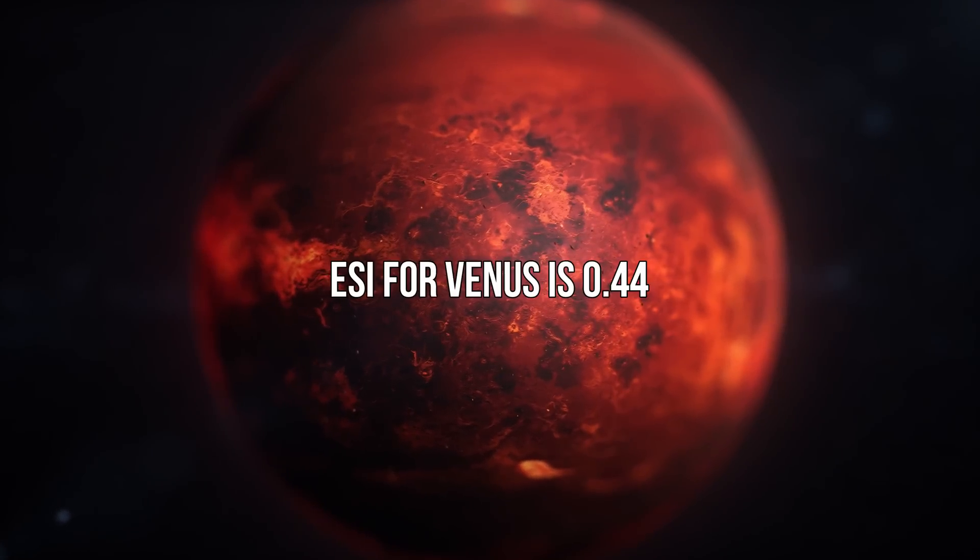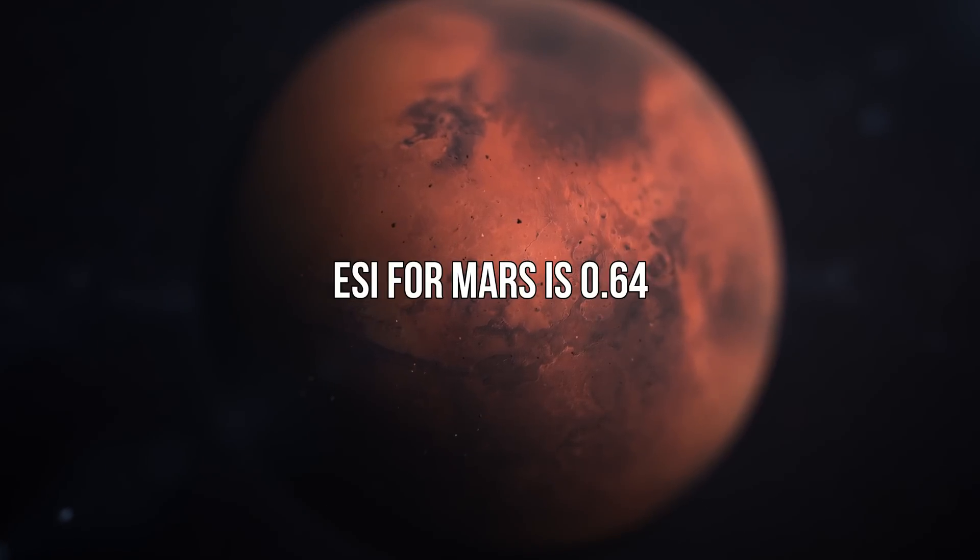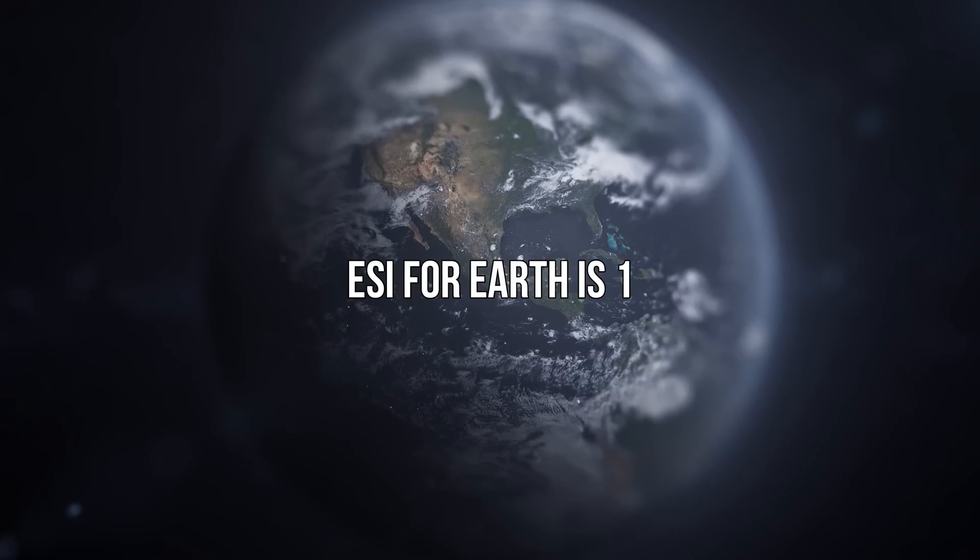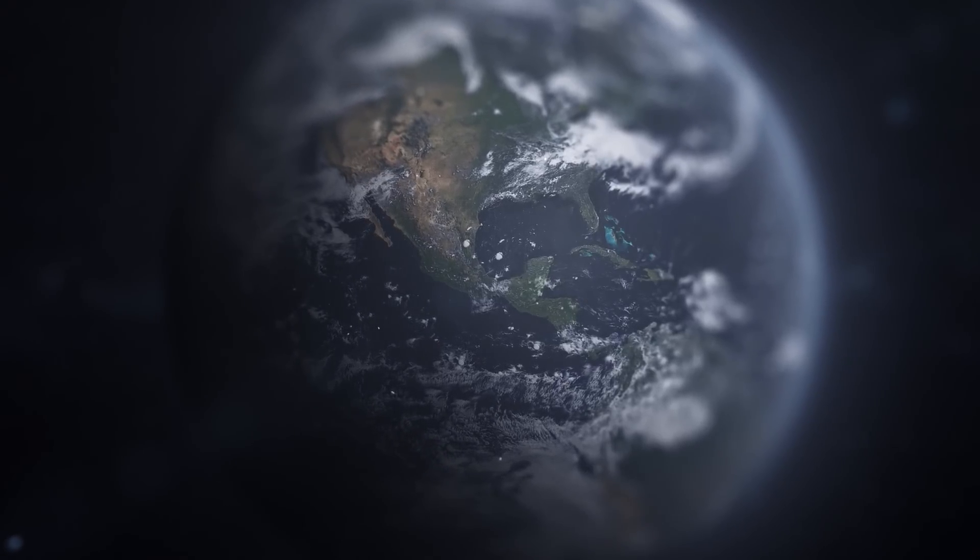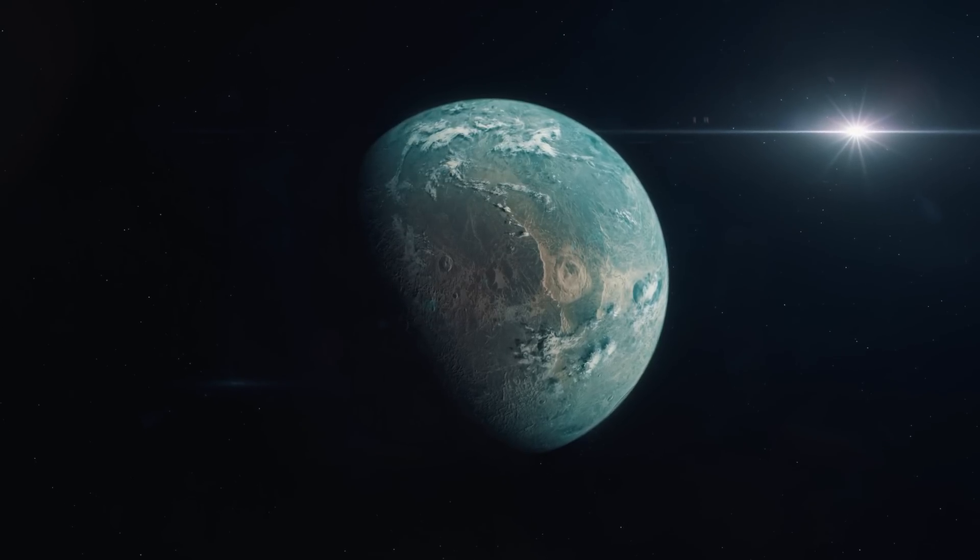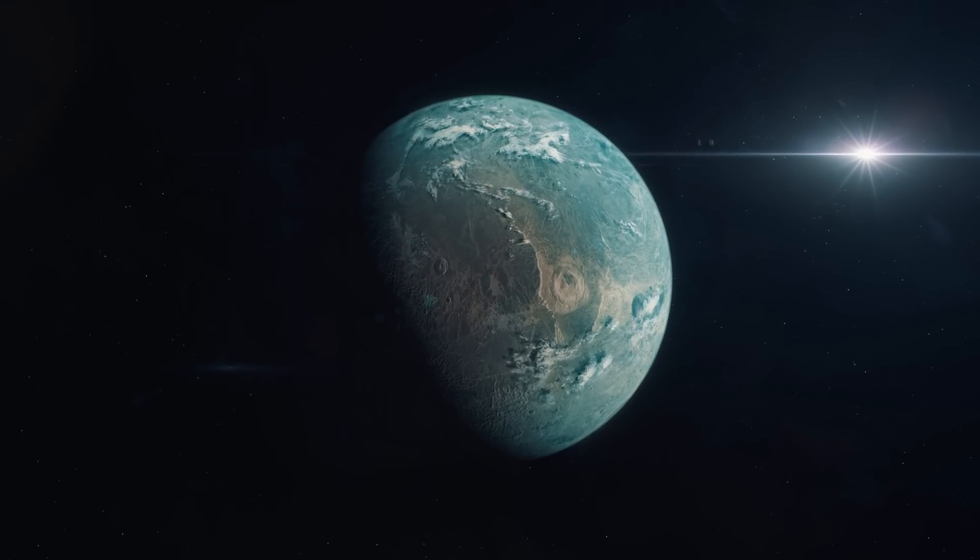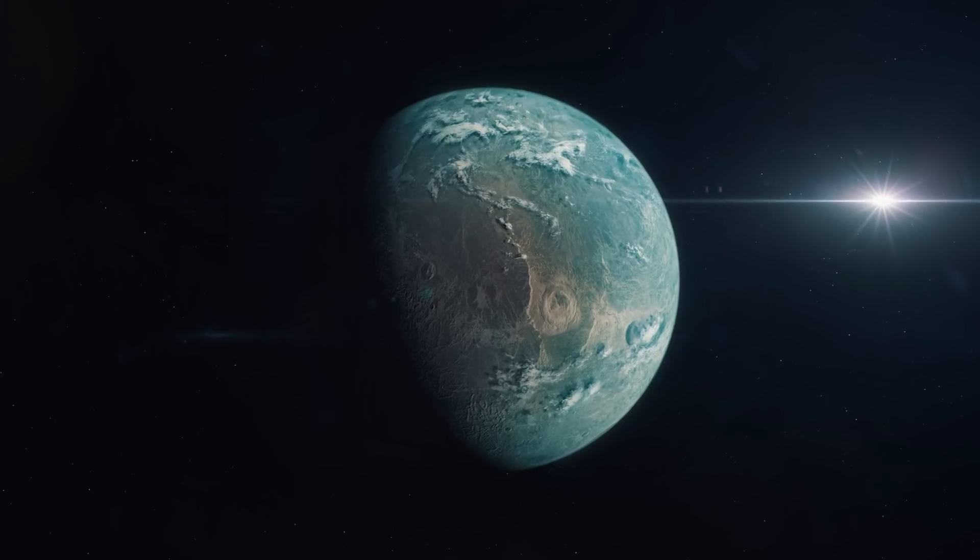For example, the ESI for Venus is 0.44, for Mars is 0.64, and for Earth itself is, of course, 1. But be careful, the ESI is not a direct measure of habitability of a planet, but formally a fuzzy comparison using a distant metric between a selected set of planetary properties of a planet and Earth.